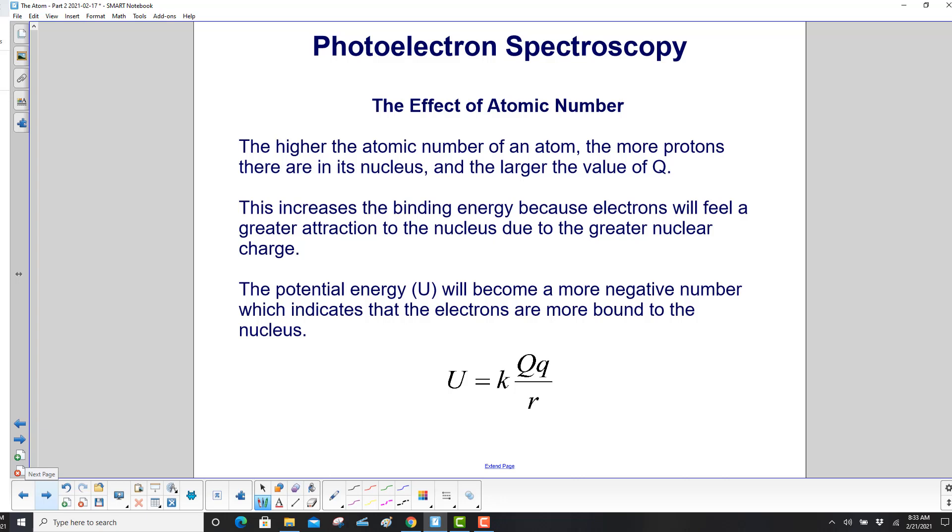Now let's talk about the effect of the atomic number. The higher the atomic number of an atom, the more protons there are in its nucleus, and that means this Q here gets bigger. That increases the binding energy because electrons will feel a greater attraction to the nucleus due to the greater nuclear charge.